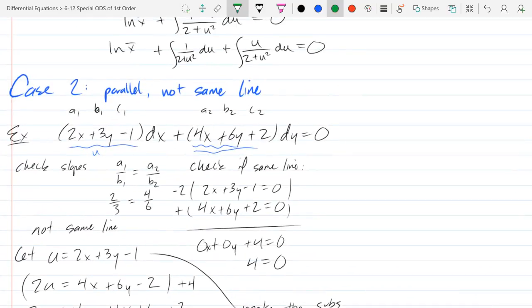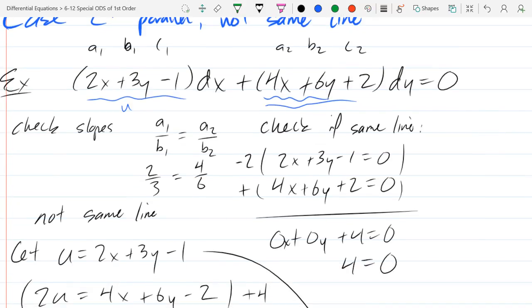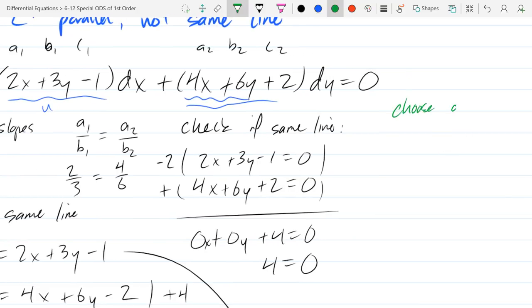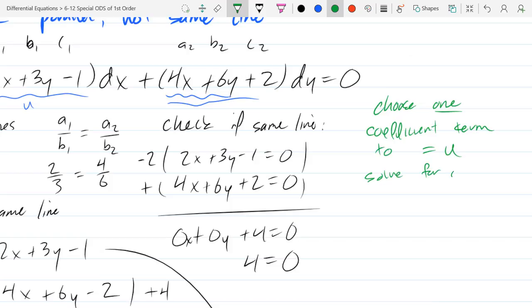And I'll do that in the green. All right, I could have chosen either one as u. And whichever one I choose, the other one is going to be a multiple of u plus some constant. So you can choose either one as u. And it doesn't matter. We ended up with the 1 half anyways, but we can eliminate that by multiplying by 2. So if you have some fraction, you can probably just multiply by that denominator and get rid of it. So you pick one of these two to be u. So you choose one coefficient term to equal u. And then, of course, we solve for the other one. Solve for the other coefficient term.